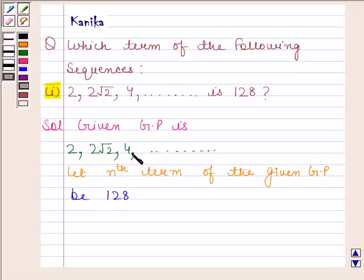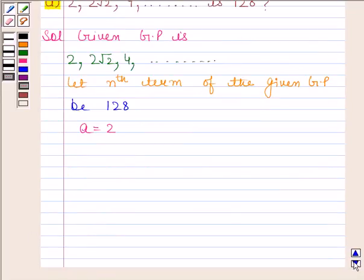Now in the given GP first term that is A is equal to 2 and the common ratio that is R is equal to root 2. We know that we can obtain R by dividing any term by its preceding term.